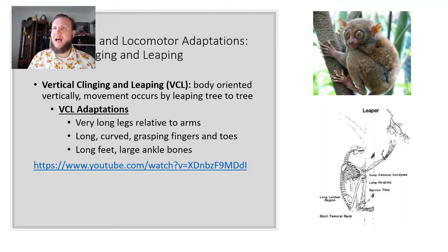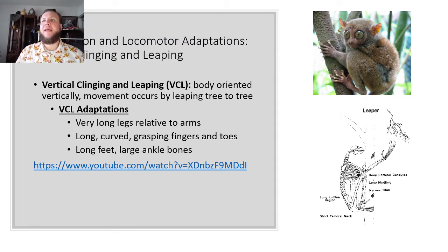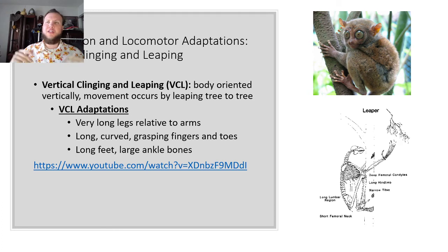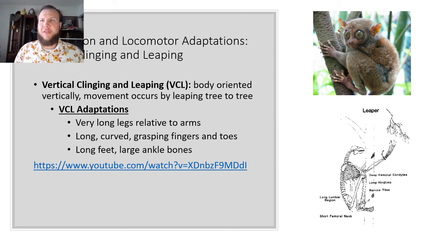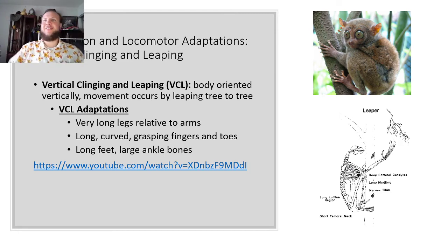For locomotion, first we'll talk about vertical clinging and leaping, also known as VCL. The body is oriented vertically and movement occurs by leaping tree to tree. Adaptations include very long legs relative to arms, long curved grasping fingers and toes, and long feet with large ankle bones. Here we see a lemur getting ready to leap — it's vertical, going forward from one tree to the next.